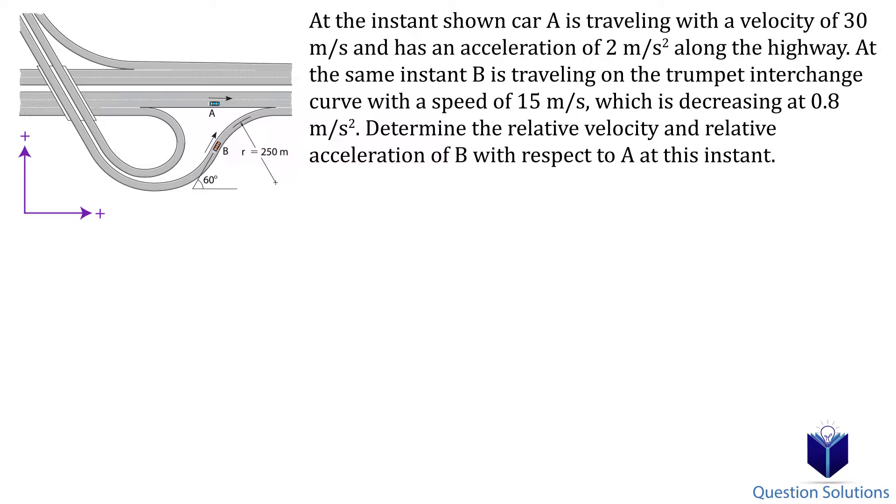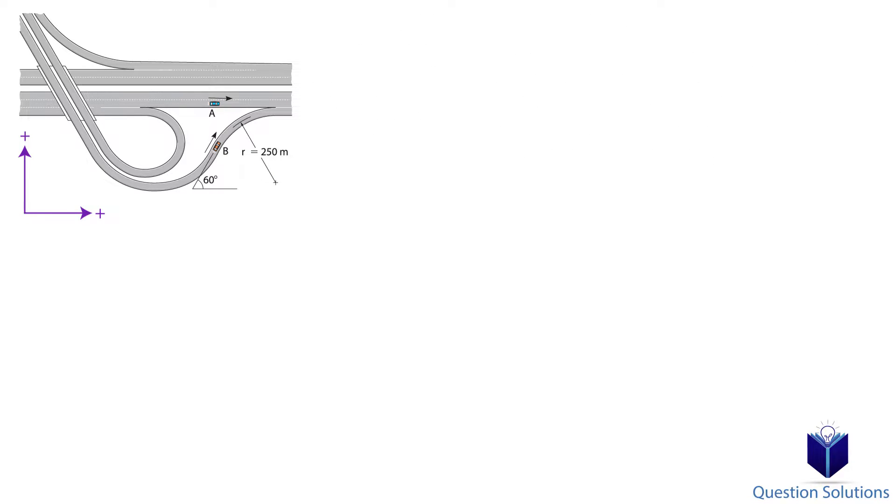Let's write the velocity of car A in Cartesian vector form. Since it's going in a straight line to the right it's going to be 30i. Now we can write the acceleration in Cartesian form as well. That's going to be 2i.